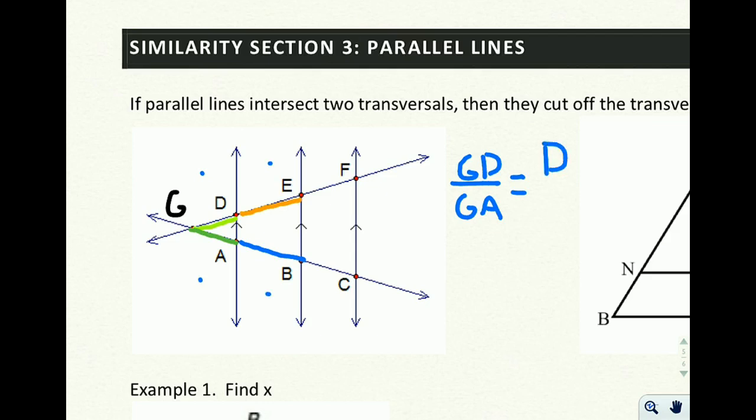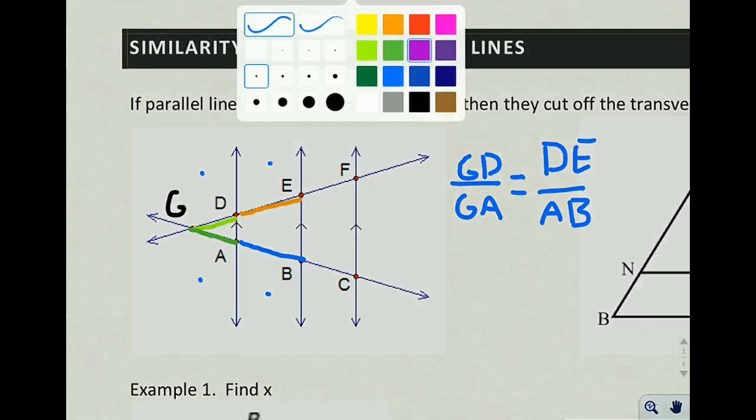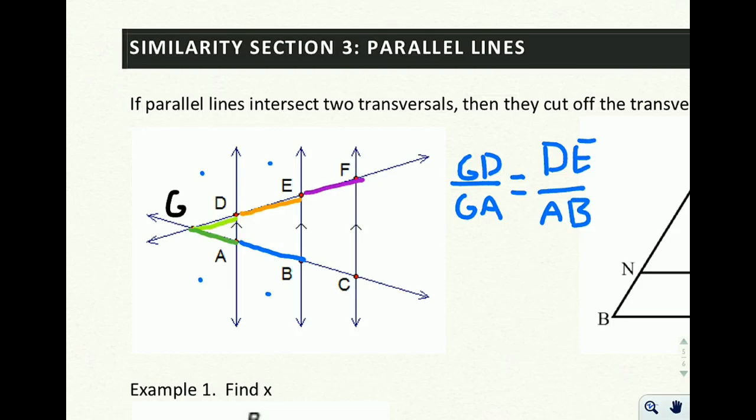DE, and again DE is that orange piece right there, to AB. And in fact, that will also be proportional, we could keep going, to EF over BC. So EF over BC.